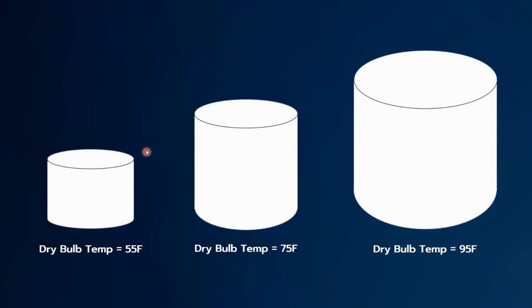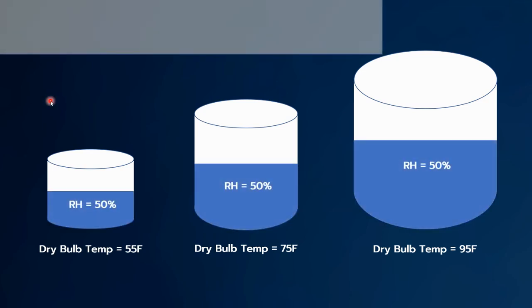Let's say we had three volumes of air at different dry bulb temperatures. At 55 degrees we represent this volume of air with a cylinder. As the temperature increases to 75 degrees the volume of air increases, and at 95 degrees the volume of air increases even more. If we were to represent 50% RH in each of these cylinders or volumes of air, we would fill them up halfway with water.